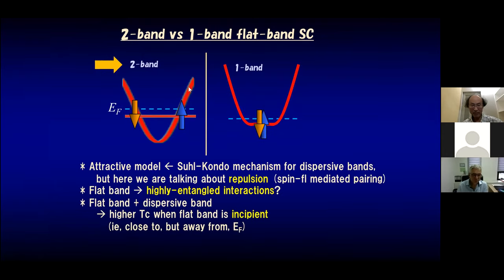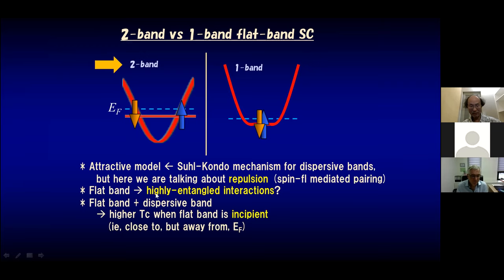For the two-band case — dispersive band plus a flat band — in the case of attractive interaction, there is a very old history dating back to the Suhl-Kondo mechanism for dispersive bands. But here we are talking about repulsive interactions, namely spin-fluctuation mediated pairing, when one of the bands is flat. One interesting point is if you've got a flat band, there's a possibility to have highly entangled interactions. Also, if we've got flat band plus dispersive band, we can show that we've got higher Tc for superconductivity when the flat band is incipient — meaning the flat band is close to, but away from, the Fermi energy.